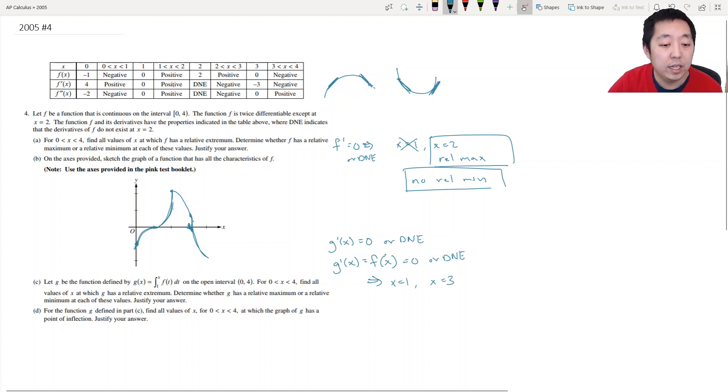And then by first derivative test it goes from negative to positive. Negative to positive means x equals 1 is a minimum. And x equals 3 goes from positive to negative. That means x equals 3 is a relative maximum. And I'm looking at f which is the same as g prime of x. So I'm looking at the slopes of g by looking at f of x.